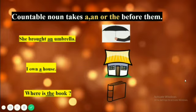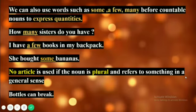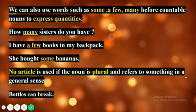We can also use words such as some, a few, many before countable nouns to express quantities. For example, how many sisters do you have? I have a few books in my backpack. She bought some bananas. No article is used if the noun is plural and refers to something in a general sense. For example, 'bottles can break' — here no article is used before the plural countable noun. So when a countable noun is in plural form, we can use it alone or use words like some, few or many.